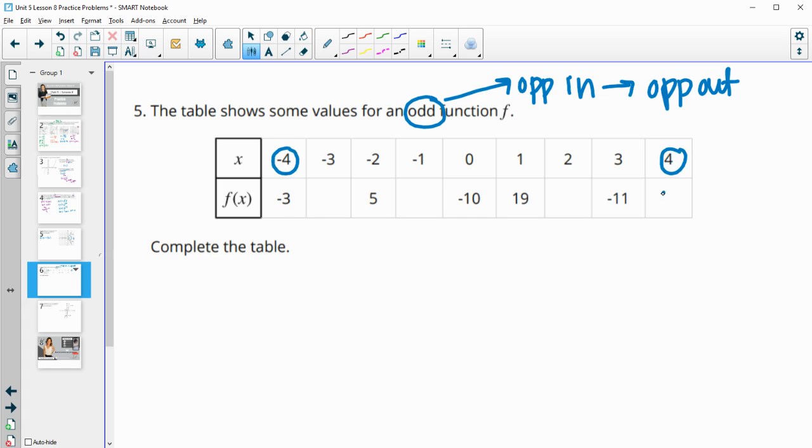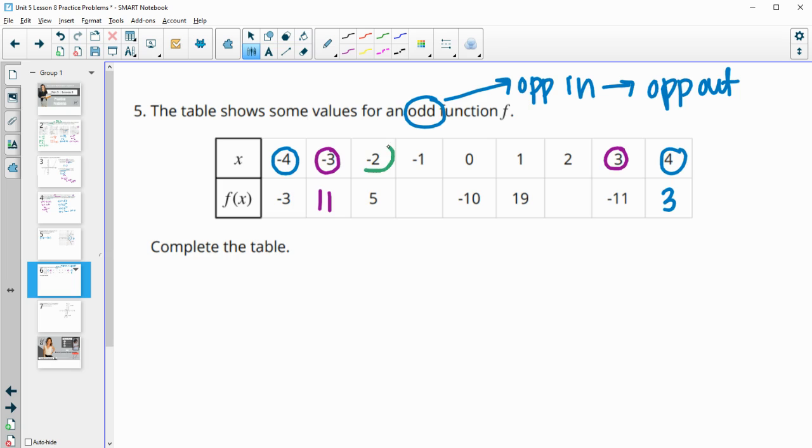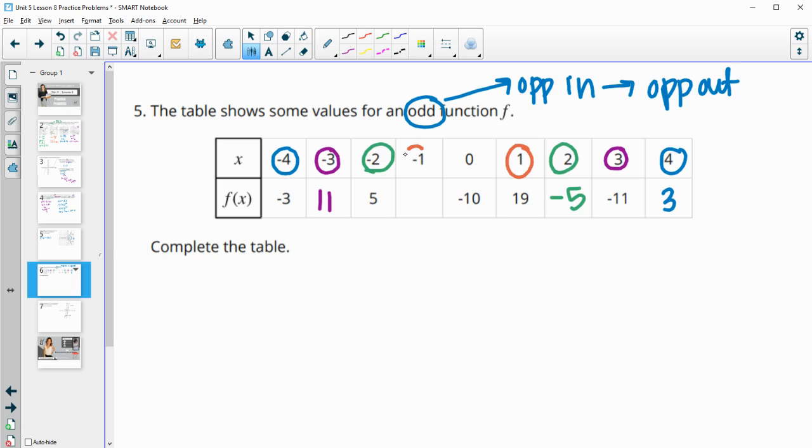Negative 3 and 3 will have opposite outputs. This one's negative 11 so this one's going to be positive 11. Negative 2 and 2 will have opposite outputs. So this one is 5, this one is negative 5. And then 1 and negative 1 will have opposite outputs. So this one's going to be negative 19.